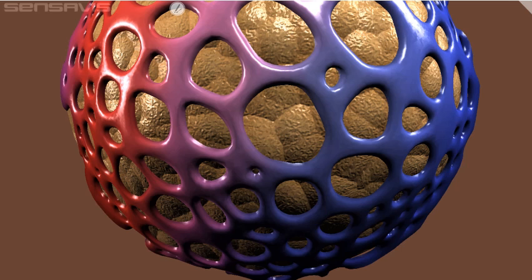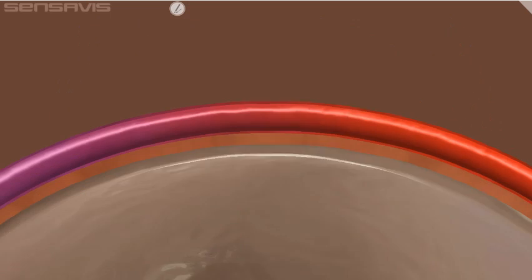You can also see from the animation that the alveoli have walls that are only one cell thick. This is important for gas exchange, as we'll see in the next animation.